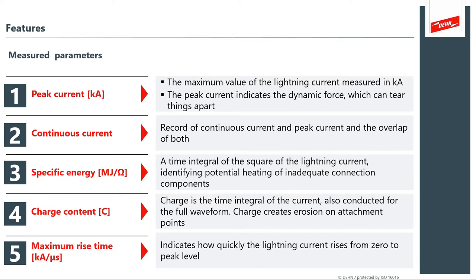This is really the key about what the product does. It measures the event — you get an indication of the peak current, a measurement of the continuous current, it calculates the specific energy delivered through the lightning strike and the charge content. What's really important is the maximum rise time, which gives you the dI/dt — the change of current over time. The faster it rises, the higher the voltage it can induce into the wind turbine system. These are all pieces you can use to diagnose the event. If you detect an incredibly high peak current, it will tell you that you have a victim and your maintenance schedule can then be accommodated accordingly.